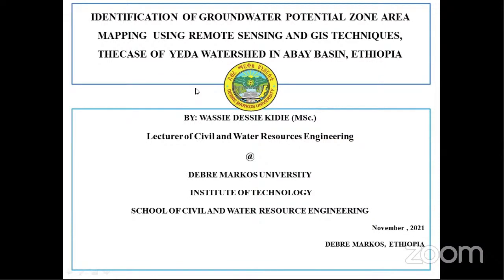First of all, I'm grateful. I'm excited to present my original work on the identification of groundwater potential zone area mapping using remote sensing and GIS techniques, in the case of the Yeda watershed in Abbai Basin, Ethiopia. I have a Master of Science degree in Hydraulic Engineering, and my basis is in Civil Engineering. For the time being, I'm a lecturer of Civil and Water Resource Engineering at Debra Marcos University, School of Civil and Water Resource Engineering.